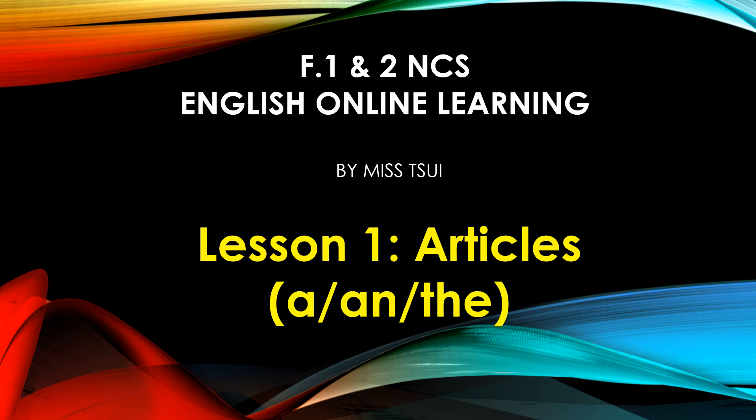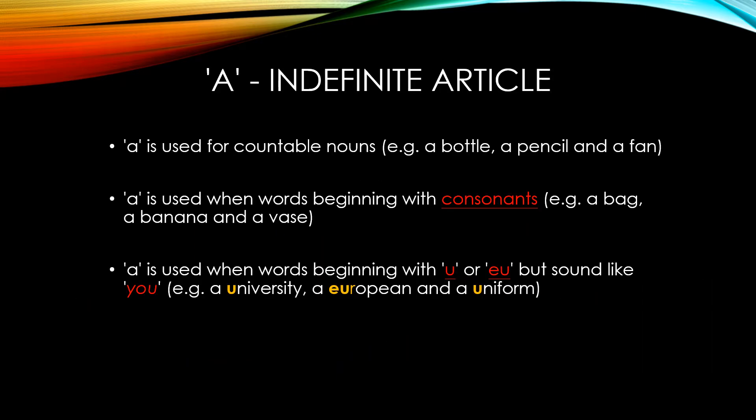Form 1 and 2 English online learning for NCS, Lesson 1: Articles A and The. 'A' is an indefinite article. A is used for countable nouns, such as a bottle, a pencil, and a fan.